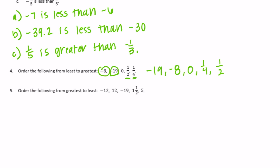Number 5: order the following from greatest to least. Looking at positives first: 12, 1 and 1 half, and 5. The greatest is 12, then 5, then 1 and 1 half. Now for negative 12 and negative 19, negative 12 is greater because negative 19 is furthest to the left on the number line, so it is the least. Order: 12, 5, 1 and 1 half, negative 12, negative 19.